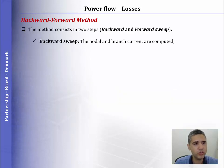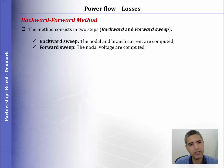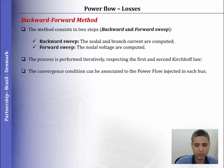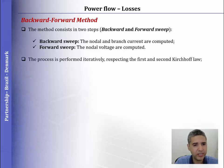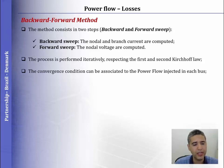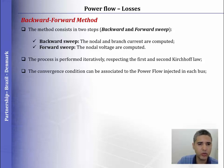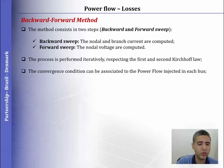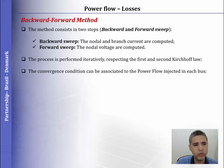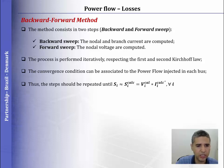The convergence is given by the comparison between the power flow — the power injected — computed in each node of the system, and the actual power in each node. We have the backward-sweep step and the forward-sweep step. The process is performed iteratively, computing in steps respecting the first and second Kirchhoff laws. The convergence condition can be associated with the power flow; in this specific case, we will use the power flow injected in each bus of the system.